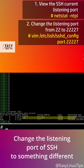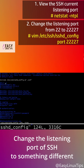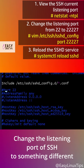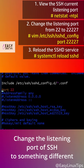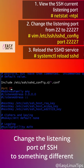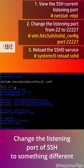Step 2: Change the listening port from 22 to 22227. Type this: vim /etc/ssh/sshd_config. Find the port line, change it to 22227, then save and quit.